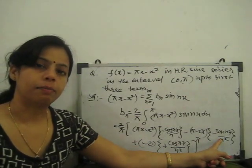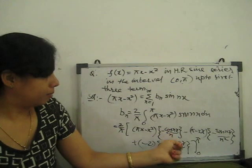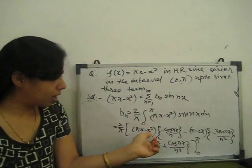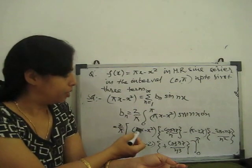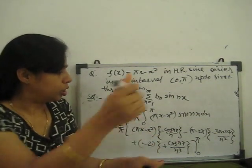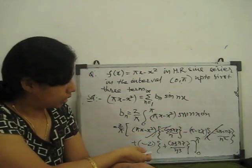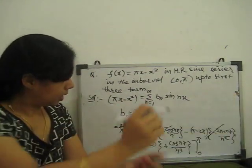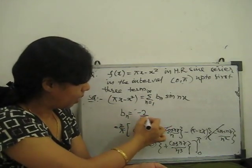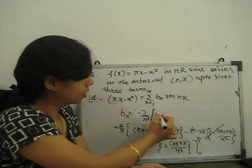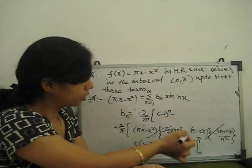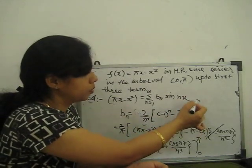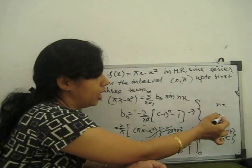Applying the limits from 0 to π: the sin terms vanish since sin(0) = 0 and sin(nπ) = 0. At the upper limit π, the term (πx − x²) becomes π² − π² = 0, and the lower limit term also gives 0. So those terms cancel. The remaining term gives bₙ = −(2/π) · (2/n³)[cos(nπ) − cos(0)] = −(4/nπ)[cos(nπ) − 1].